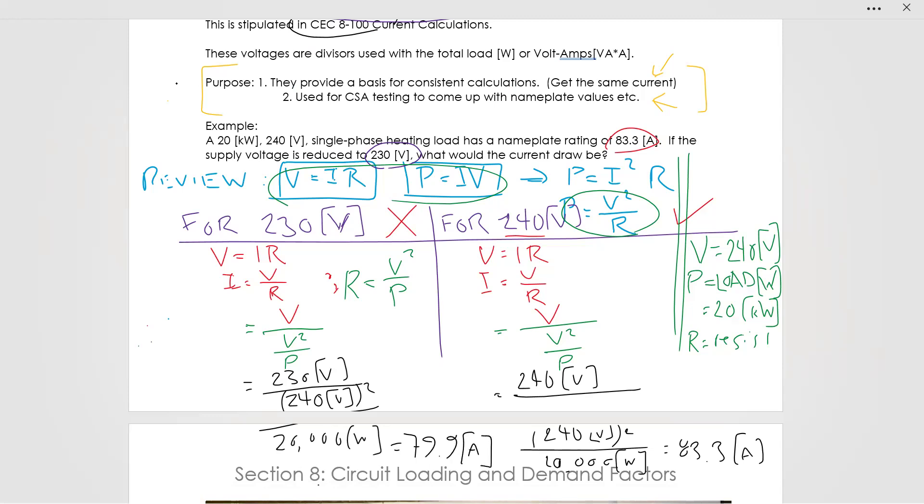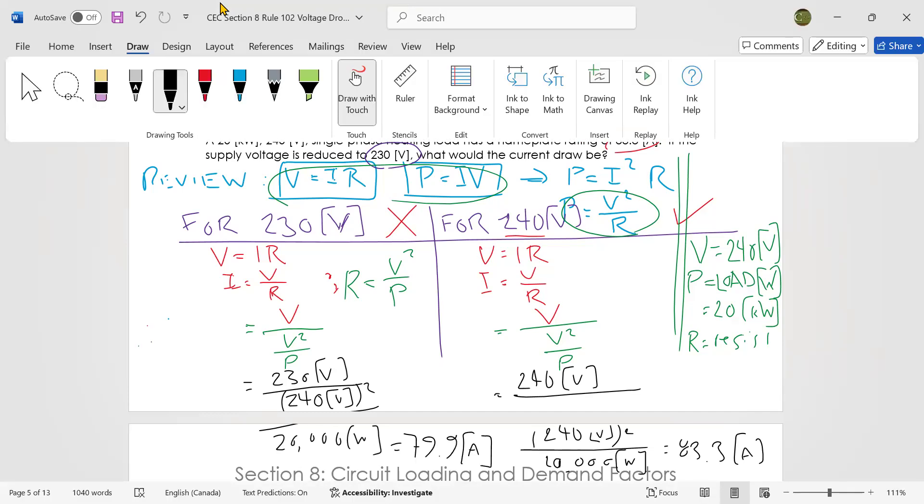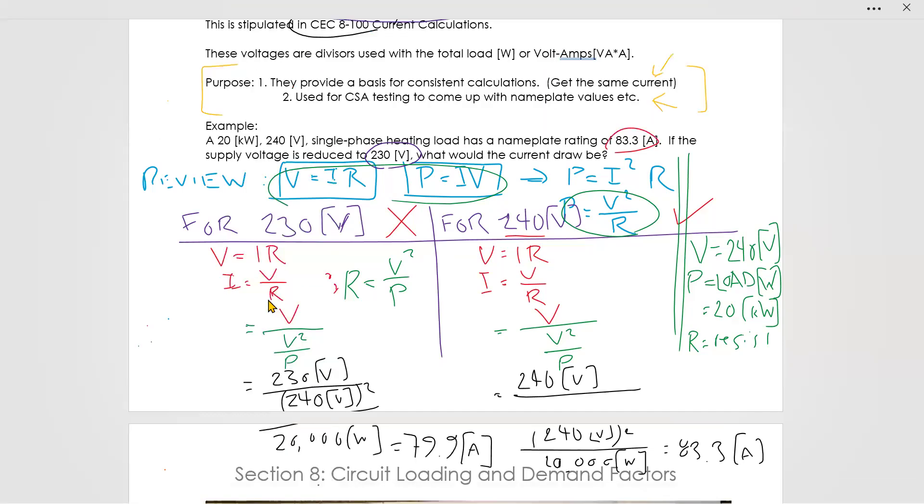Now, do you say to yourself, oh, close enough, no problem? No, you don't say close enough, no problem. Because the problem is, when we've done it wrong, we have 79.9 amps. When we've done it correctly, it's 83.3 amps. This comes out with a lower current.